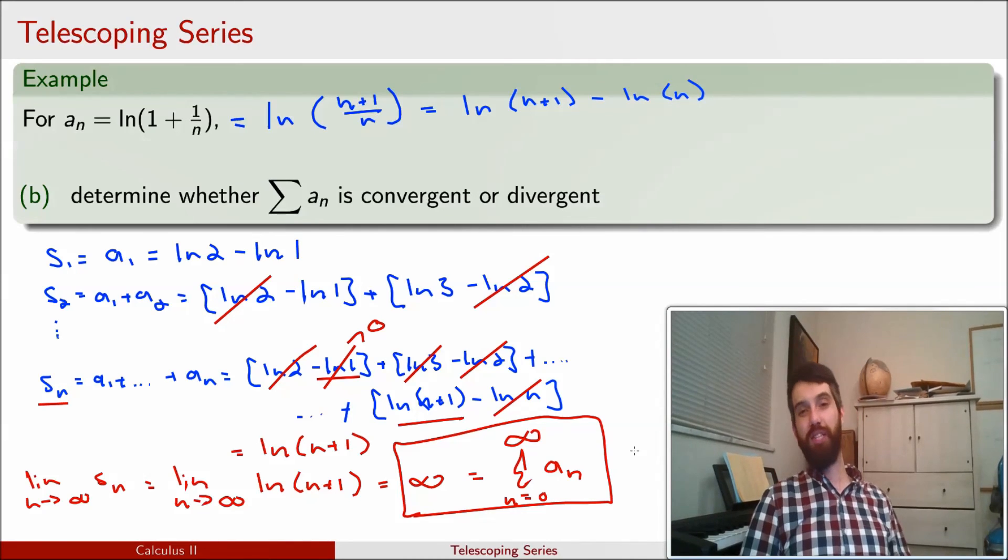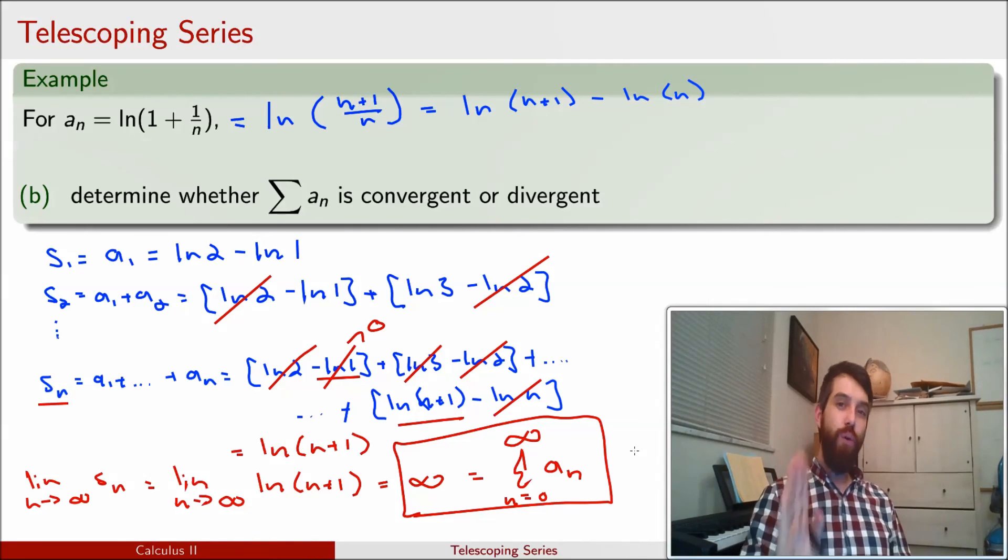So these telescoping series are kind of funky, and they give us another thing that we can compute. If it was the case that this limit of the s_n's went to a number, then not only would we know it converged, but we would say it would converge to that number. In this case, we got a divergent one. But if it converged, we would not only know that it converged, we would know what it converged to.